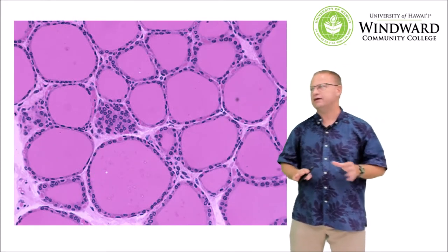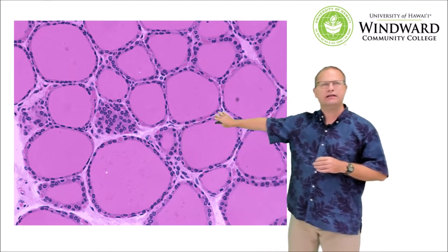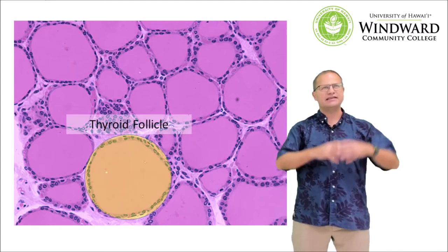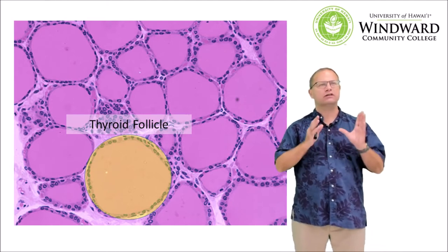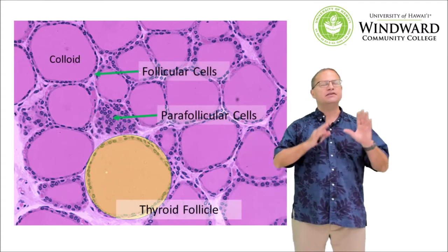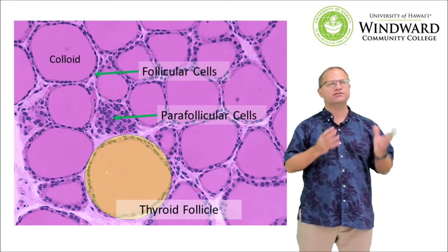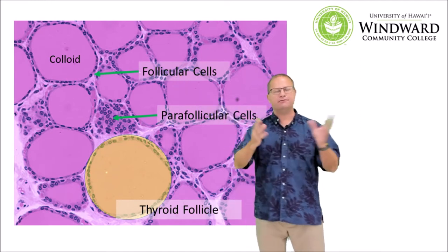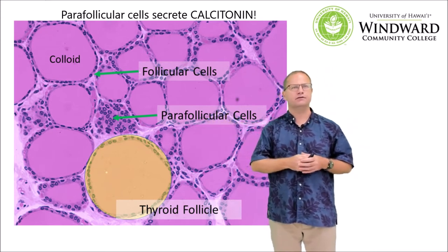At 400X magnification, we can see that the thyroid gland is made up of repeating structures called thyroid follicles. A follicle is a sac of epithelial tissue that is secreting something — in this case, thyroglobulin, which is a colloid stored inside. This colloid is the precursor for making thyroxin, which regulates our basal metabolic rate. The colloid is made by follicular cells that make up and surround the follicle. We also have parafollicular cells on the outside of the follicles.